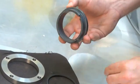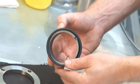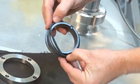Make a visual inspection of the stationary part of the John Crane shaft seal. Mount the O-ring on the new stationary part of the seal.